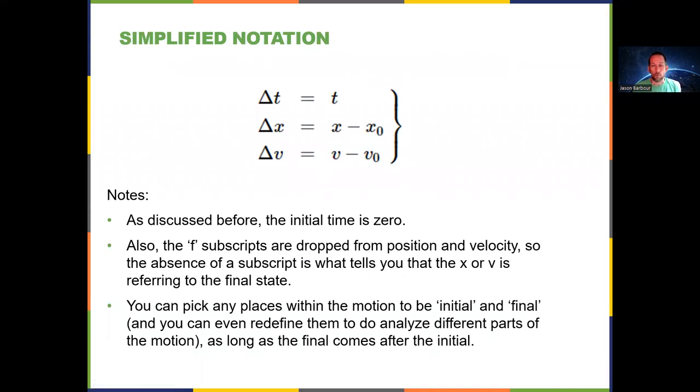So a reminder about some of our notation. We talked before about how delta t can get simplified down to just t. When we see delta, it's always final minus initial, so tf minus t0, where t0 is 0, and then tf just gets called t.